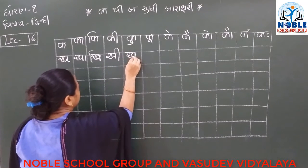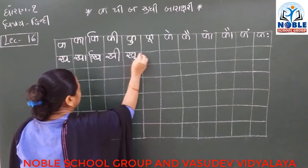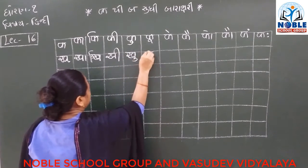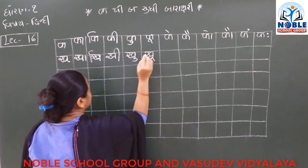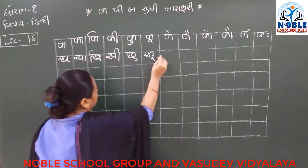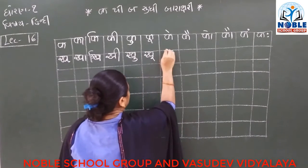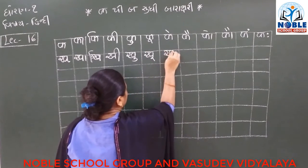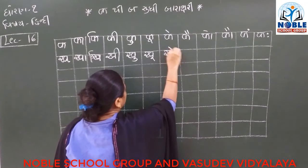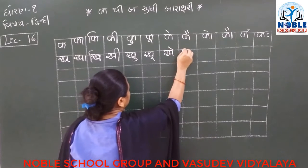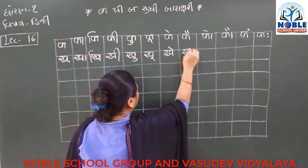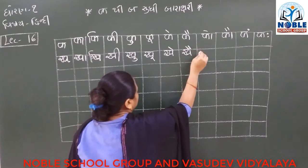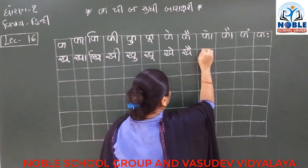20 ની બારક્ષરી સીખીશું. આ Hindi ni barakshari — ek ek kho — apne buzhne rati sukhye kho. Hindi ni barakshari né indi nanola khora shikhye. (We will learn the 20 barakshri. We will learn the Hindi barakshri one by one.)